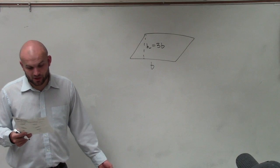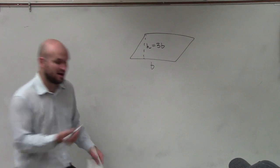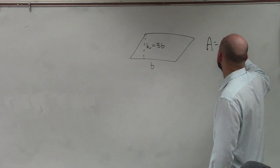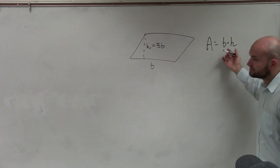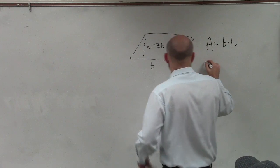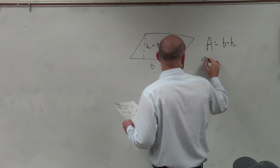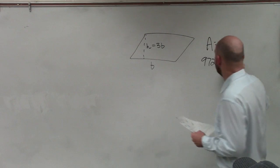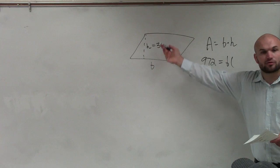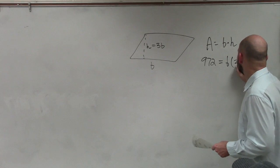And then it says that the area of the parallelogram is 972. So we're talking about area. So we do remember area of the parallelogram. Area equals the base times height. Well, we know what the base is. And then they say the height is three times the base. So therefore, I know the area, which is 972, equals base times h, we said is three times the base. So we can write this in as 3b.